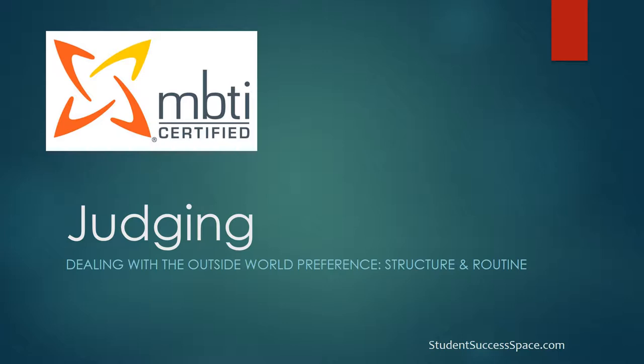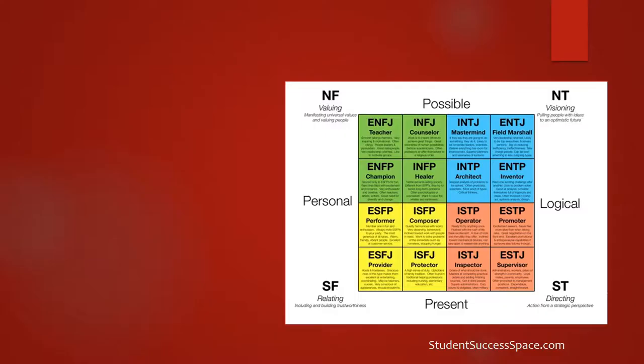We're down to our final pair of the MBTI Type Indicator, and this one is how one deals with the outside world — that means their environment. So you have judging and you have perceiving. Judgers are really based on structure and routine; they like to know what's expected of them at all times.